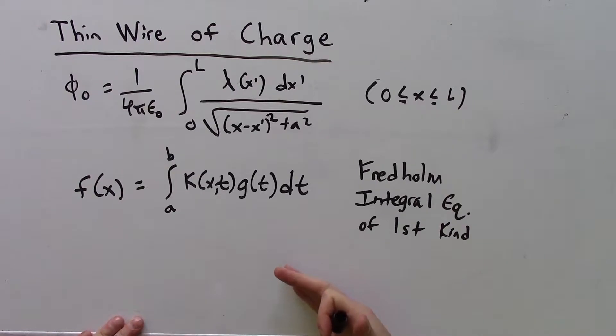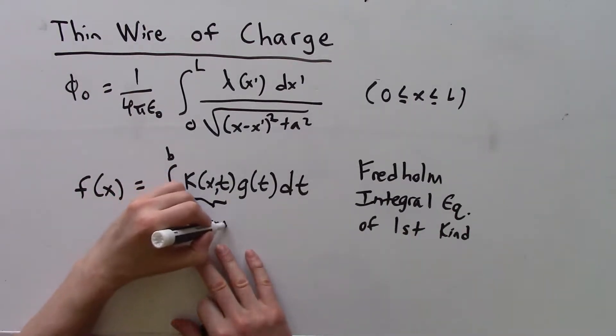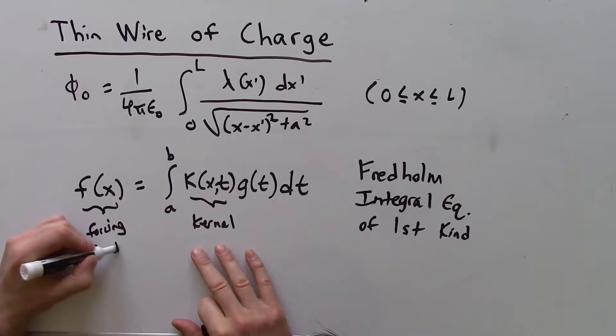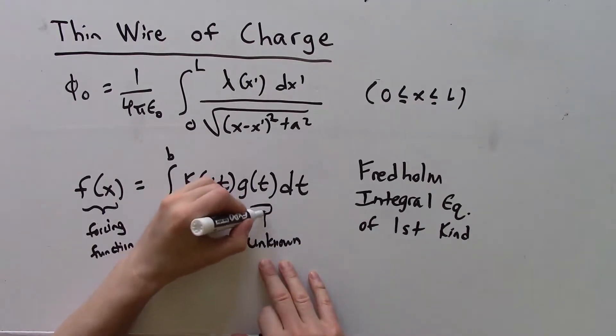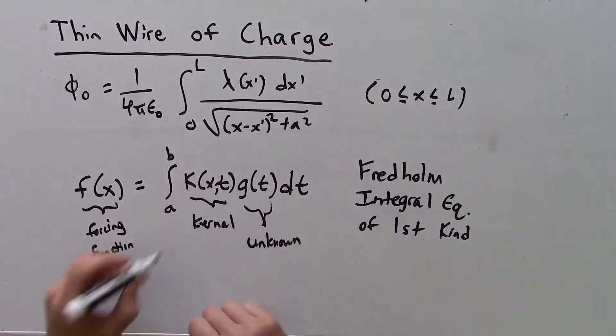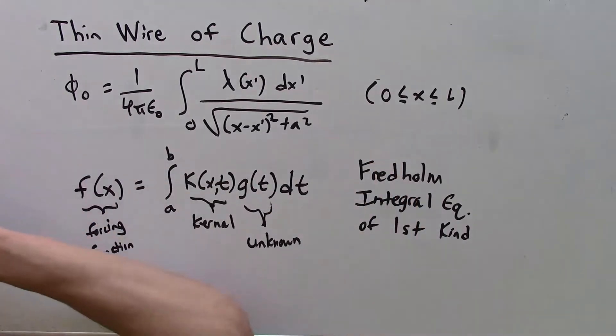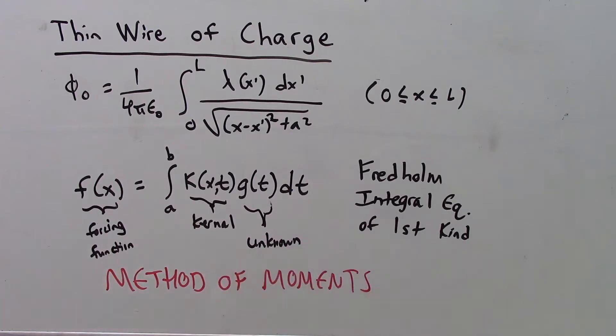This is special now because this here is called the kernel, this is the forcing function, and this here is the unknown. Anytime you see an equation that fits this template, a little voice should shout 'method of moments.'